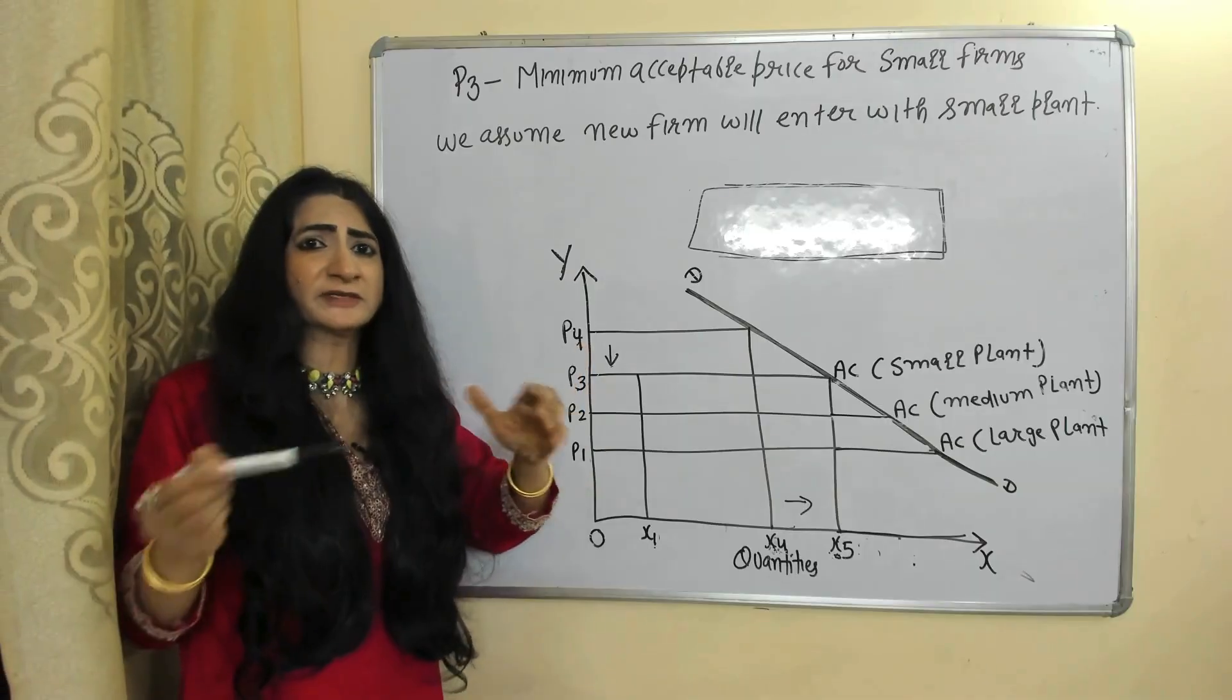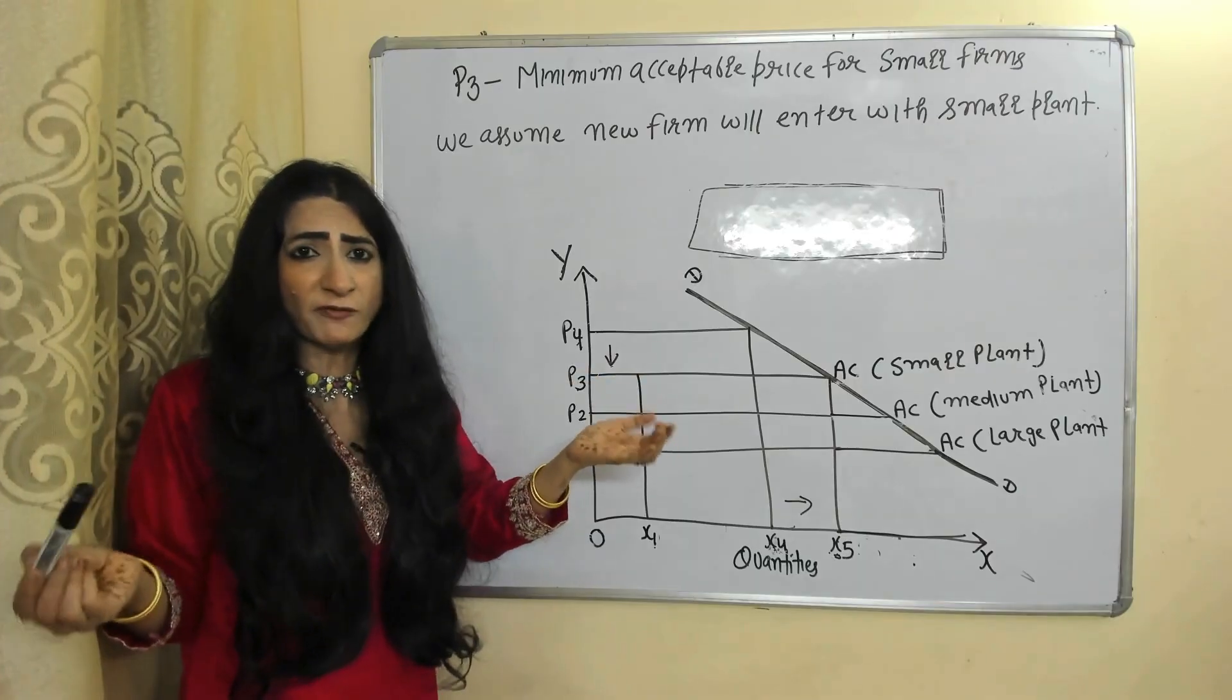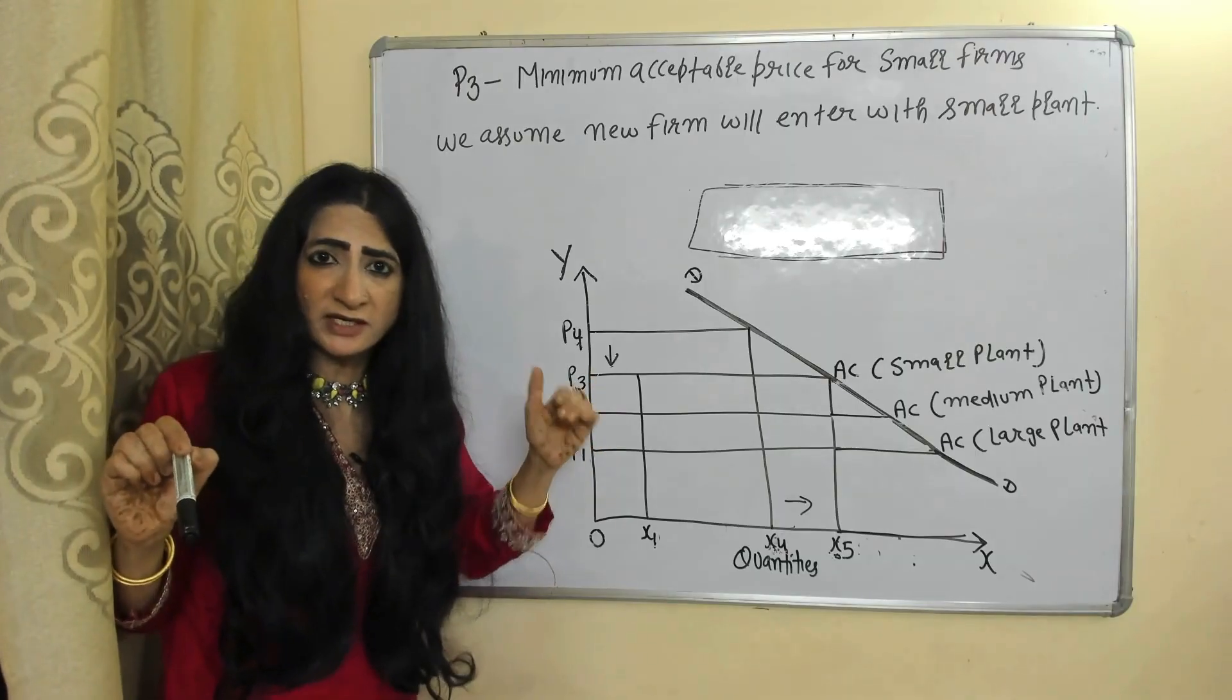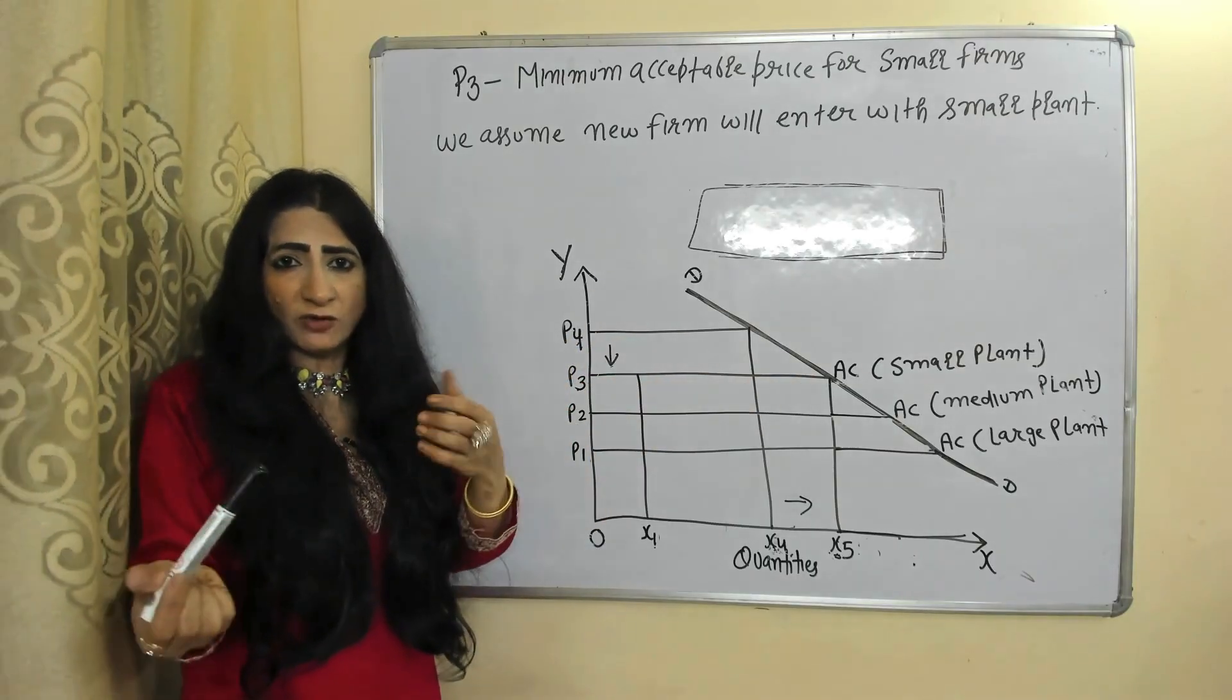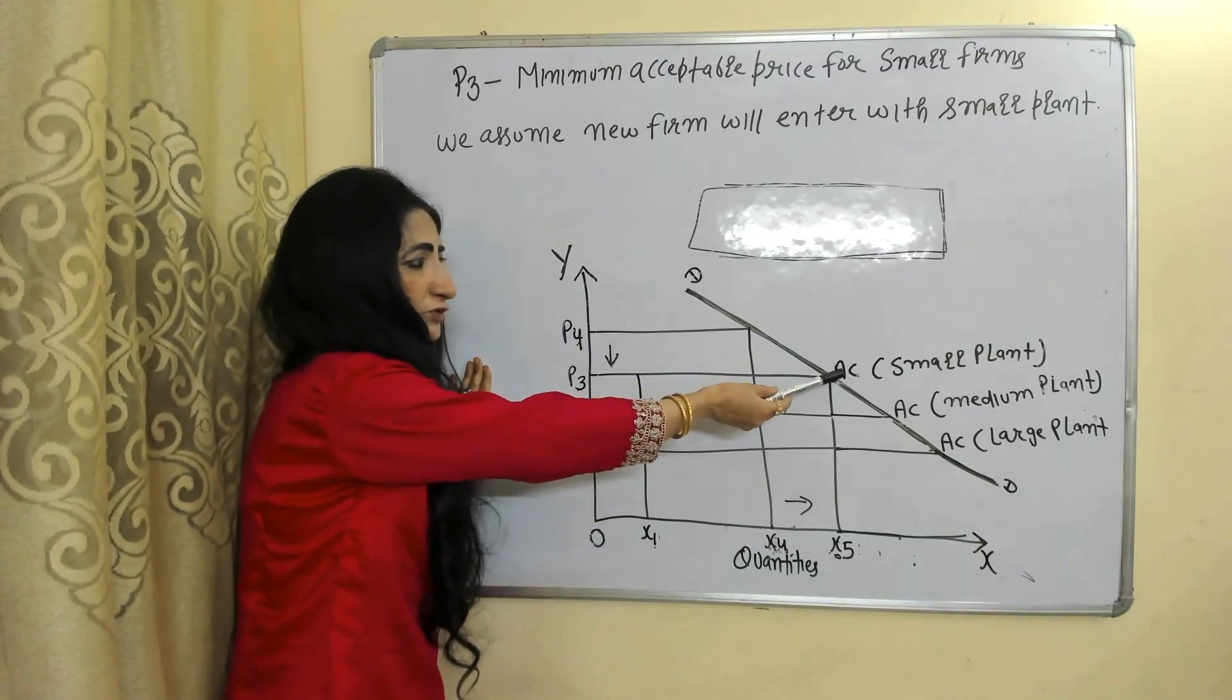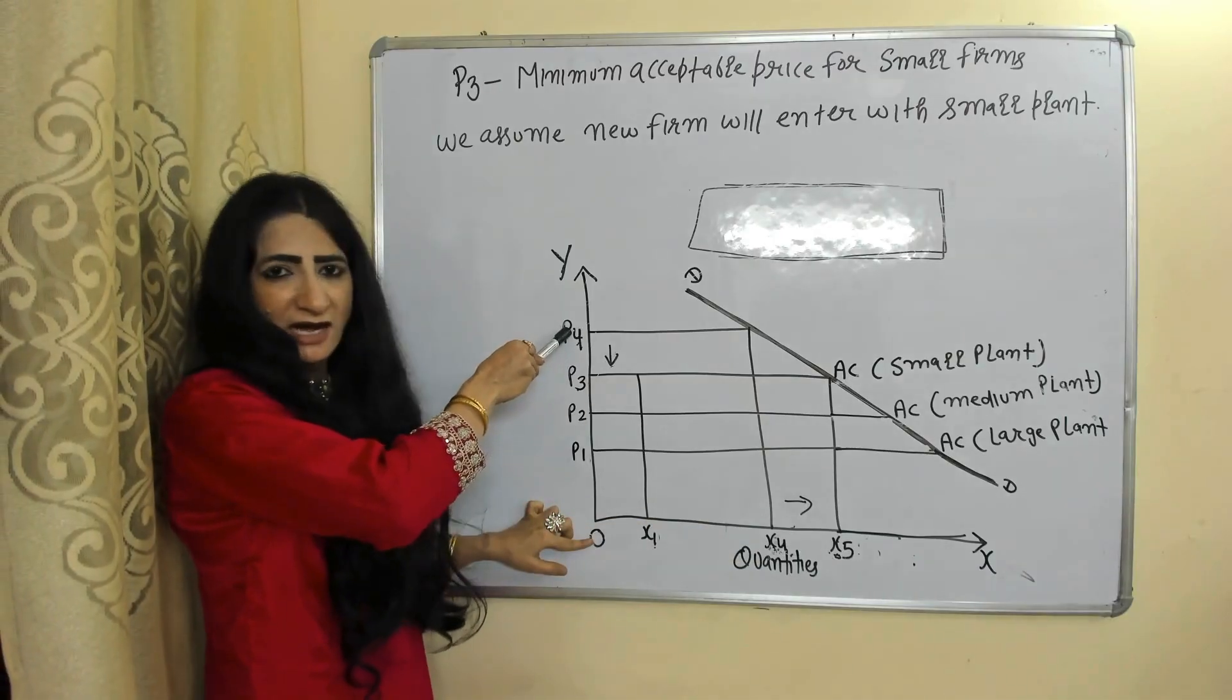Obviously, initially a new firm cannot enter with a large plant. Initially, new firm cannot afford a large plant. So in this model, we assume any new firm will enter with a small plant. That's why the leader firm deliberately made this strategy for a small plant by keeping less output and charging higher price.